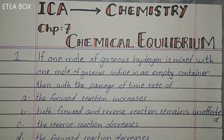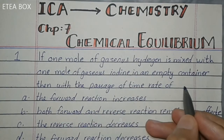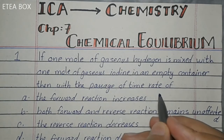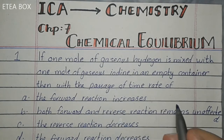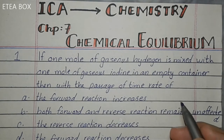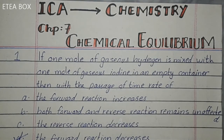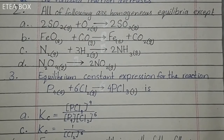Assalamu alaikum students. Today our topic is chemical equilibrium — let's discuss its MCQs. If one mole of gaseous hydrogen is mixed with one mole of gaseous iodine in an empty container, then with the passage of time, the rate of — initially the forward reaction increases, but with the passage of time the forward reaction decreases. So option D is correct. The forward reaction decreases with time and the backward reaction increases.